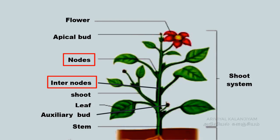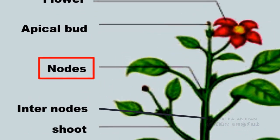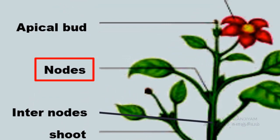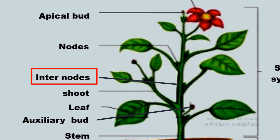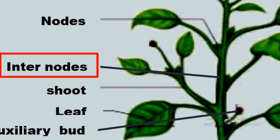The stem has nodes and internodes. Nodes are the parts of the stem where a leaf arises. The part of the stem between two successive nodes is called an internode.